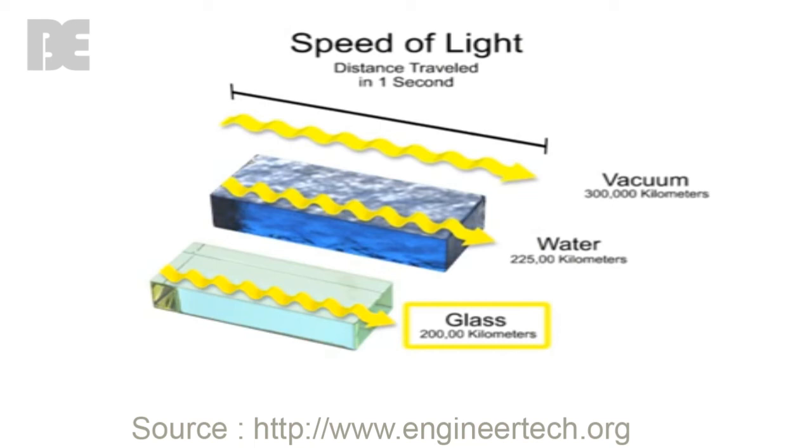Light travels very slowly through a diamond at about 41% of the speed of light, or 125,000 kilometers per second, which is less than half the speed of light in a vacuum.